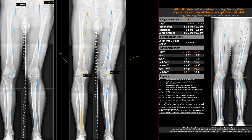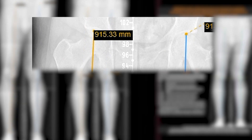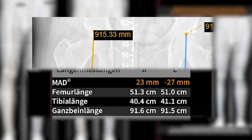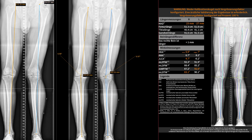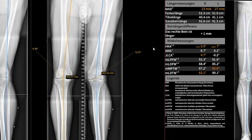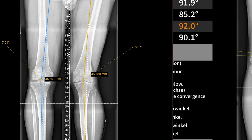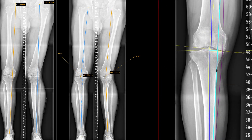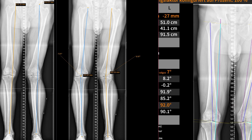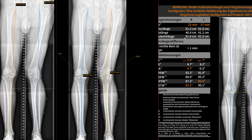I got a leg length of 91.5 cm, and the AI got 91.6 — just 0.1 cm or one millimeter off. The other side was 91.5, exactly the same value. Then for the angles, I got seven degrees varus and the AI also got seven degrees varus. There's one degree difference on the right side, but that's just the variability we have as humans. So the measurements are very close and very accurate.